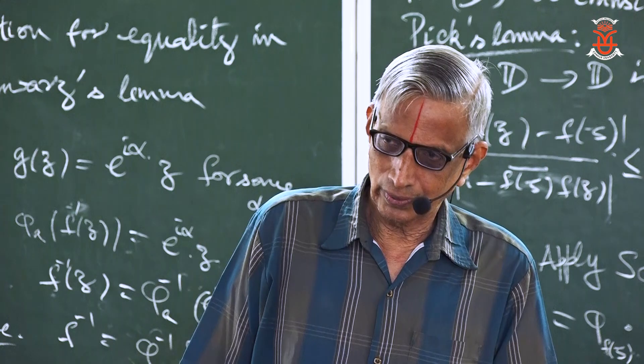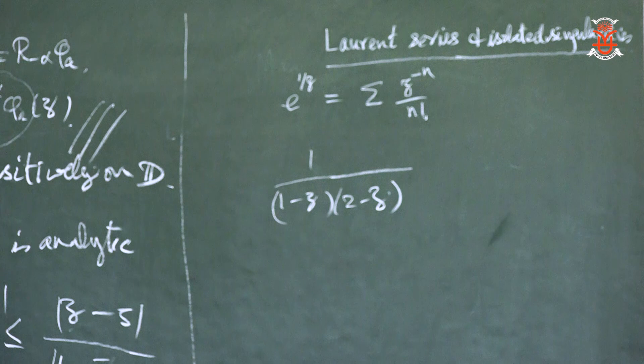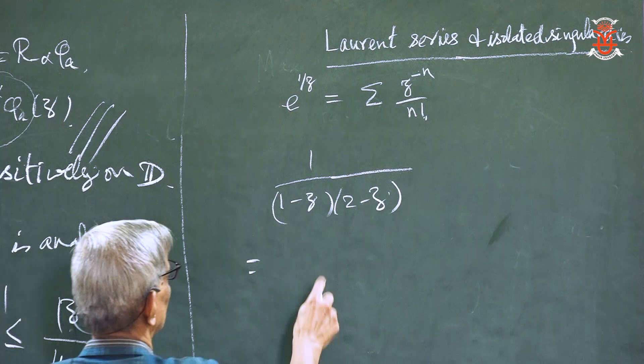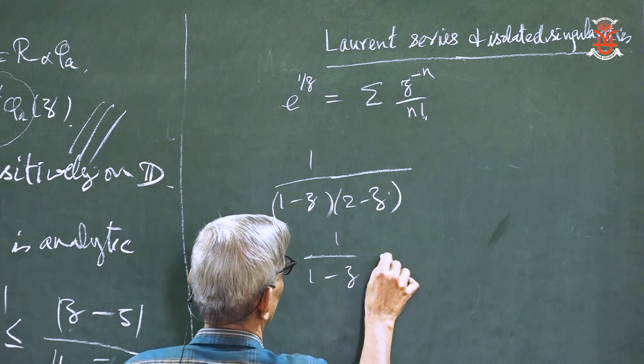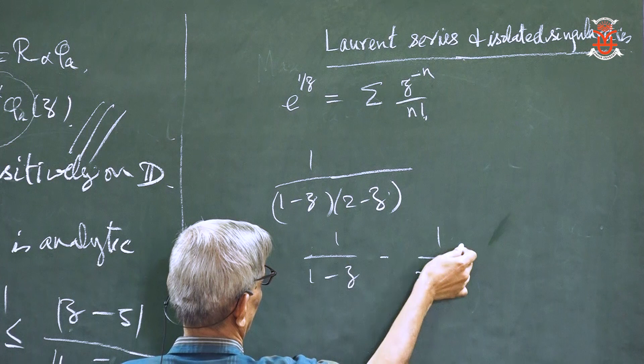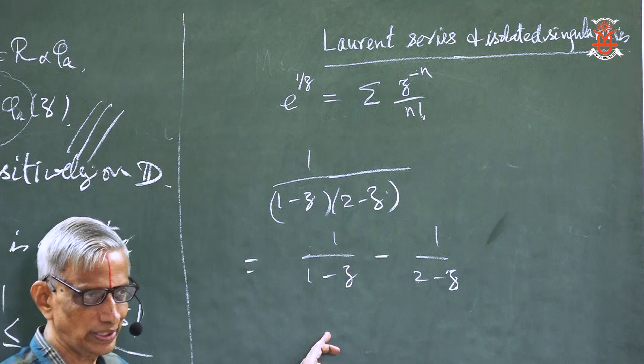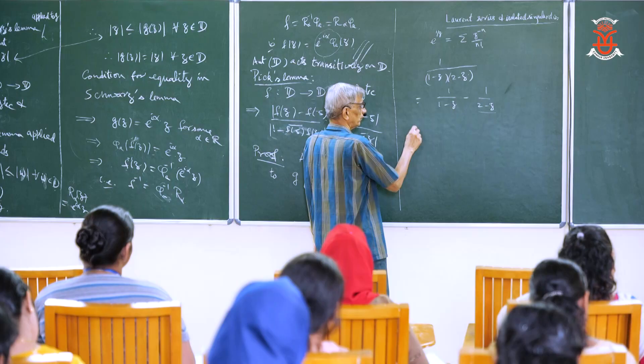Look at this next example. Can you get an expansion and where is it valid? First, write it in partial fractions. You get 1/(1−z) plus 1/z or similar terms. Let's look at each of these separately and then plug them back in.